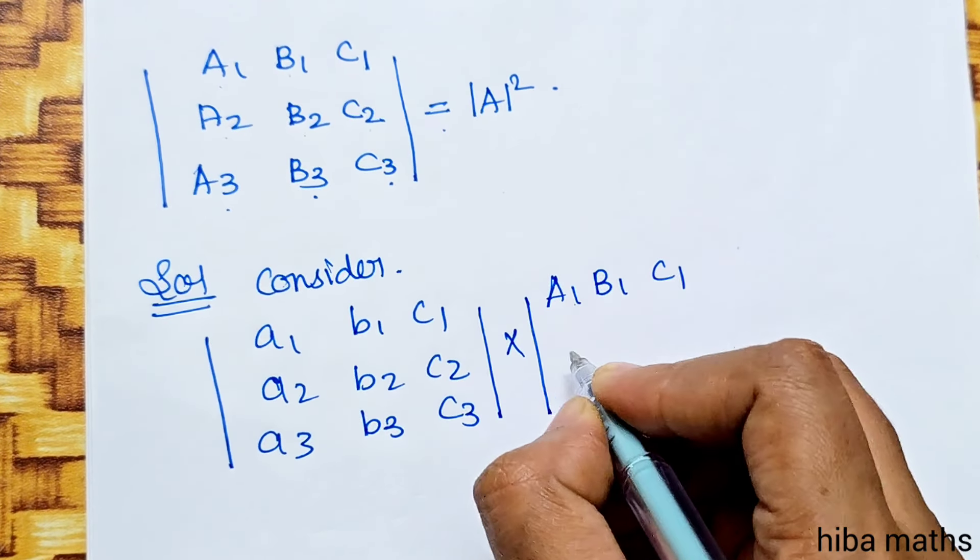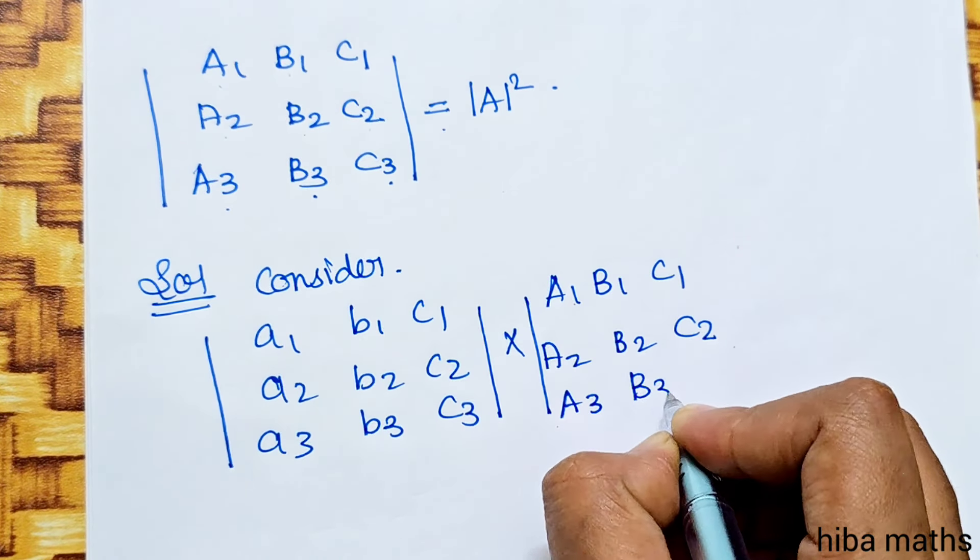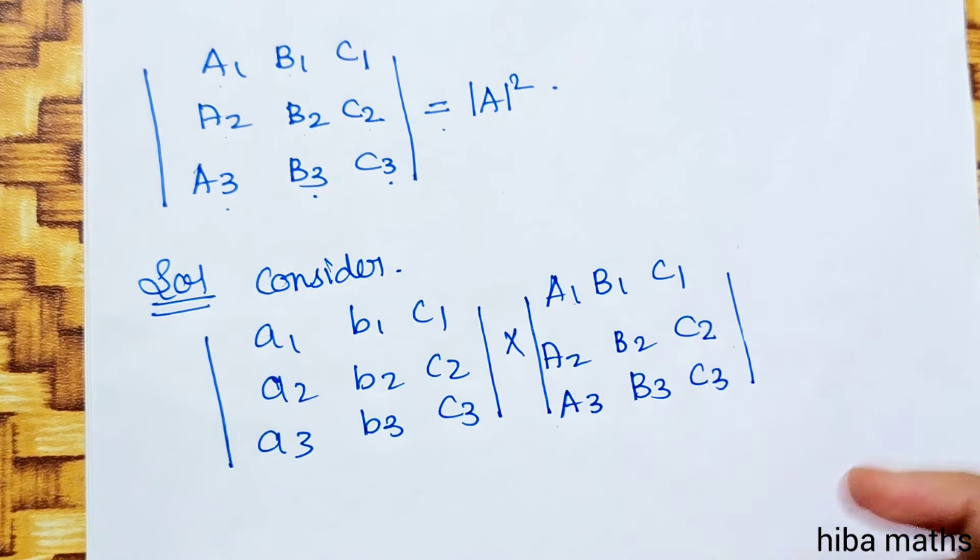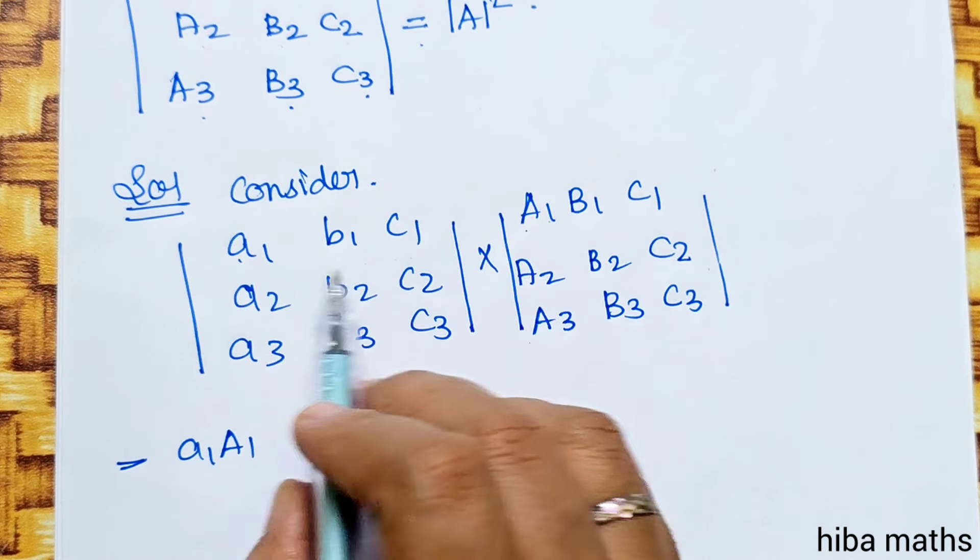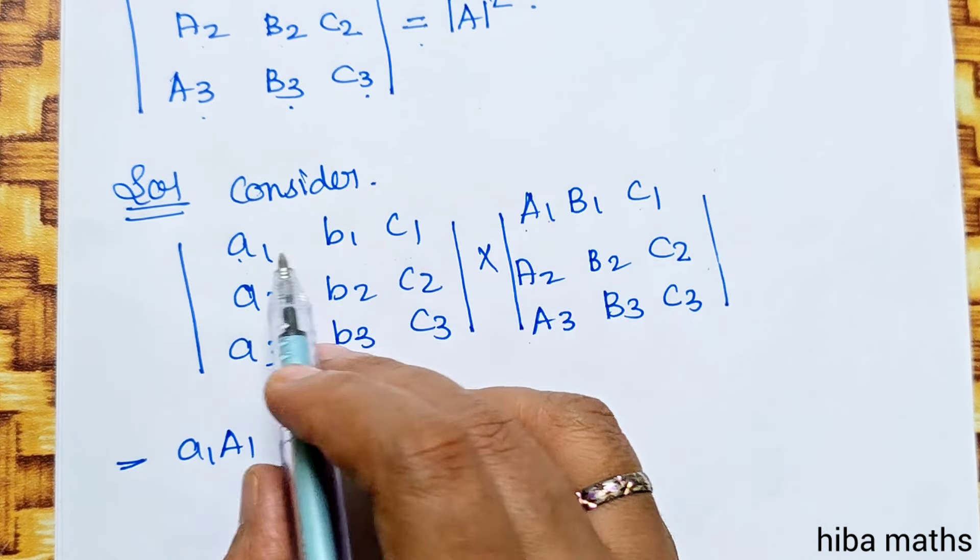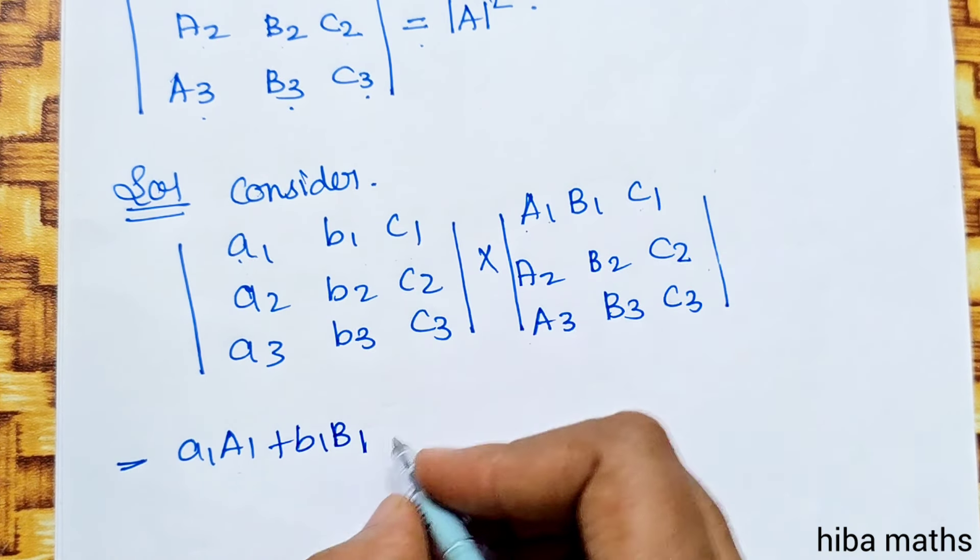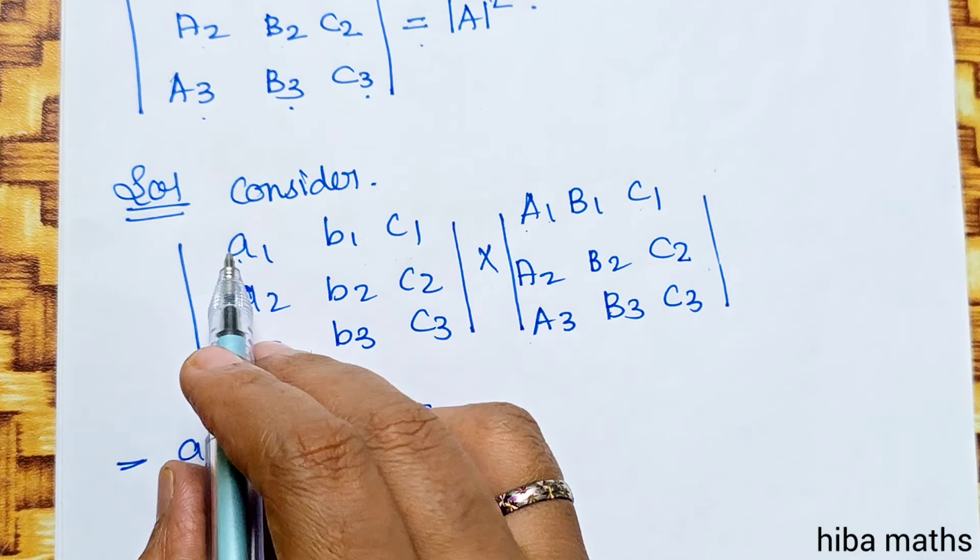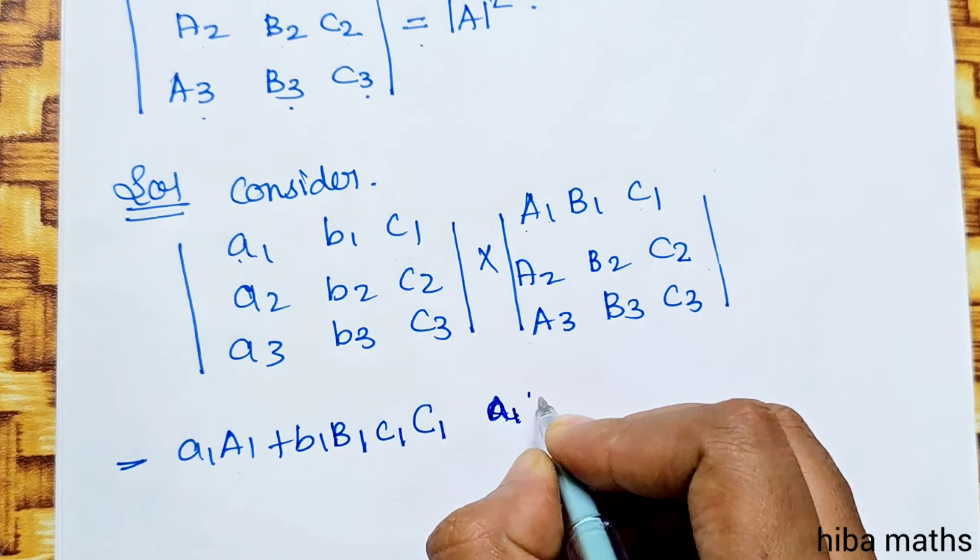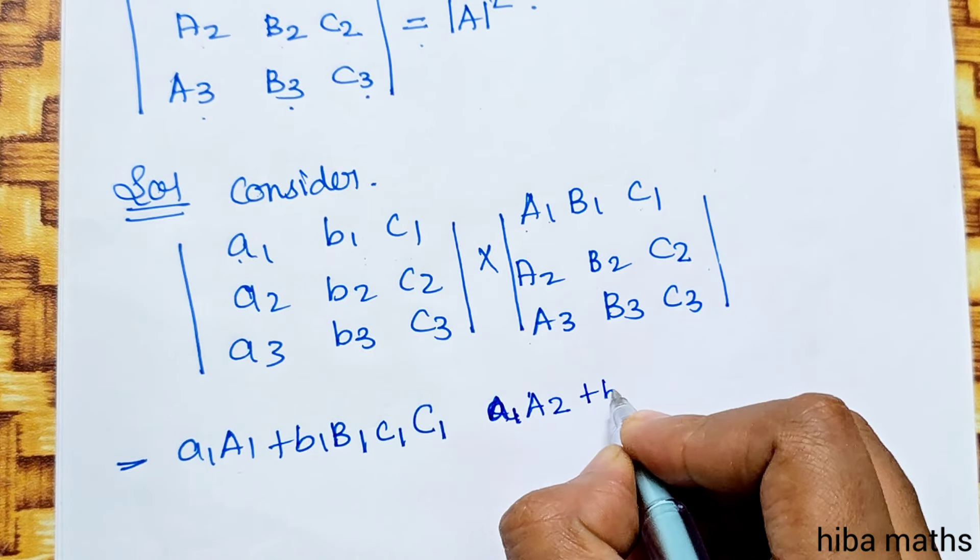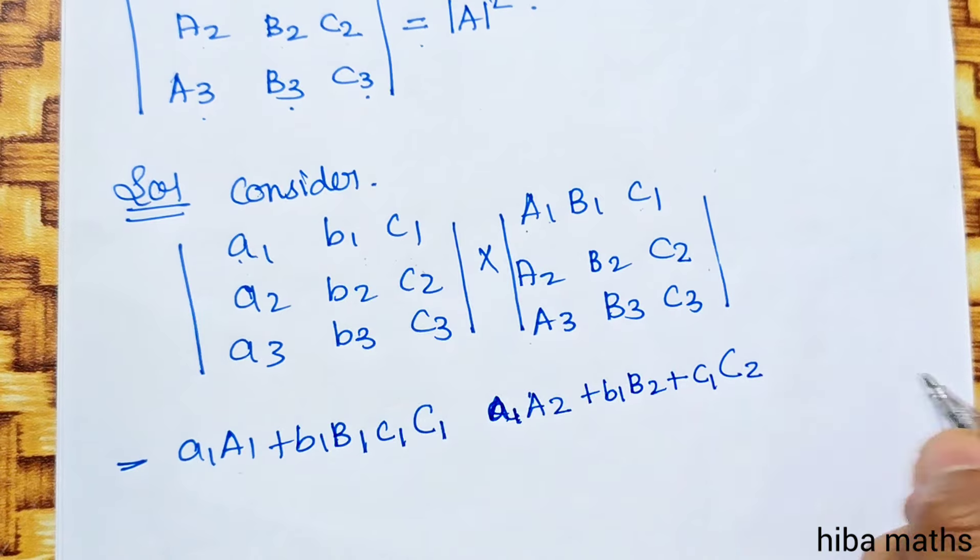Consider a1 b1 c1, a2 b2 c2, a3 b3 c3 multiplied by A1 B1 C1, A2 B2 C2, A3 B3 C3. Now we multiply row by column.